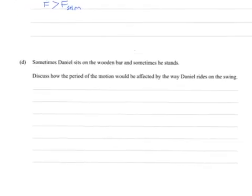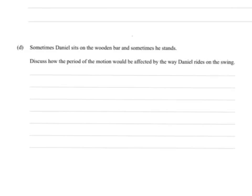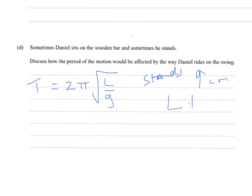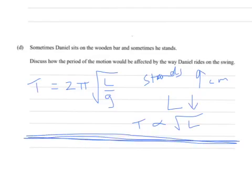Part D, sometimes Daniel sits on the bottom bar and sometimes he stands. Discuss how the period of the motion would be affected by the way Daniel rides on the swing. There's a couple of approaches you could take for this. There's two, you could look at just the SHM equation for a pendulum, 2 pi square root l over g. When he's standing, your centre of mass is moving up, which means your length is decreasing. So that means, since t is proportional to square root of l, as your length decreases your period also decreases. So this part would apply if he starts the swing in a standing position or a seated position.